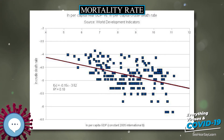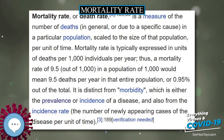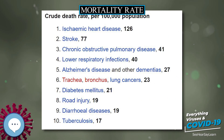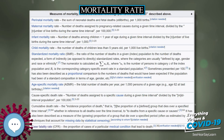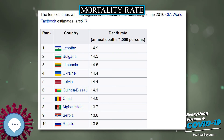In the world, approximately 62 million people die each year from all causes of death combined. In 2006, more than 36 million died of hunger or diseases due to deficiencies in micronutrients. Of the roughly 150,000 people who die each day across the globe, about two-thirds — 100,000 per day — die of age-related causes. In industrialized nations, the proportion is much higher, reaching 90%.